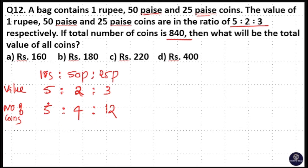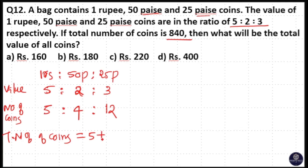So, number of coins of 1 rupee is equal to 5, number of coins of 50 paisa is equal to 4, and 25 paisa is equal to 12. That means total number of coins is equal to 5 plus 4 plus 12 is equal to 840. So, 5 unit plus 4 unit plus 12 unit is equal to 840.